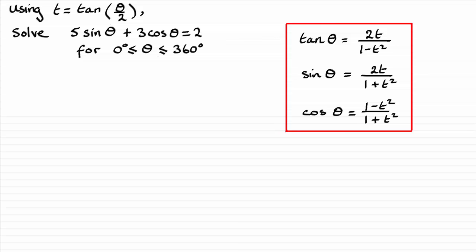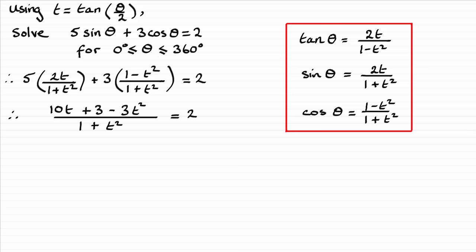And if you do that you're going to get this result. And what I'm going to do next is multiply out the brackets and put it all over 1 plus t squared. So if you multiply out the brackets you're going to get 10t plus 3 minus 3t squared, and it'll all be over 1 plus t squared.